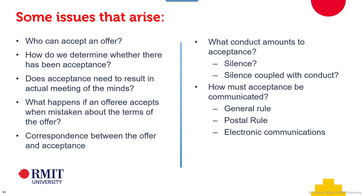Some of the kinds of issues that arise we started to talk about in that quiz. So, who can accept an offer? Offers are generally made to a person and that person can accept, but it depends on how the offer is made as to who can accept. A unilateral offer made to the world could be accepted by anybody. A standard offer might be made to a particular class of people — for example, I will sell this telephone to any of the people in this room, first in, first served.